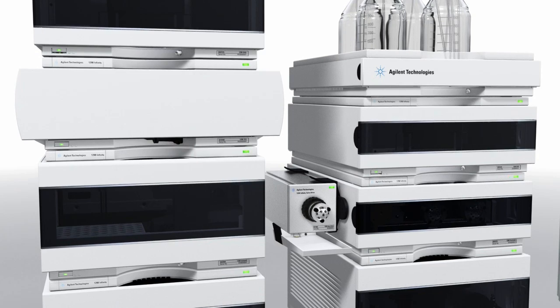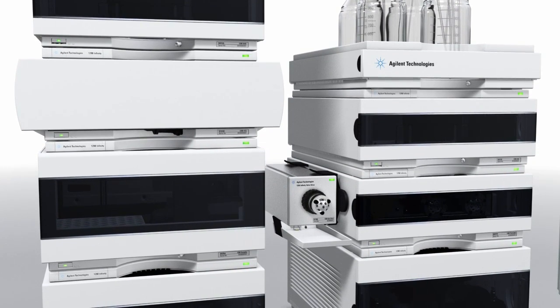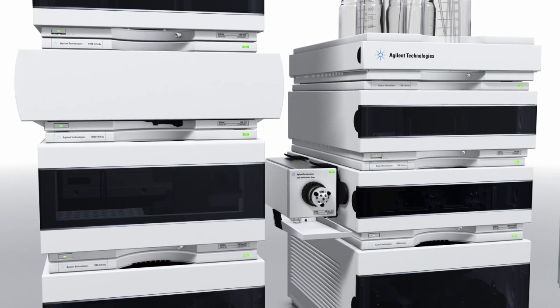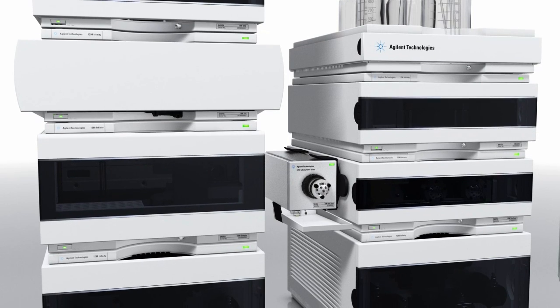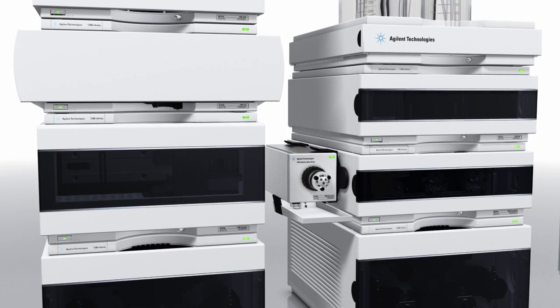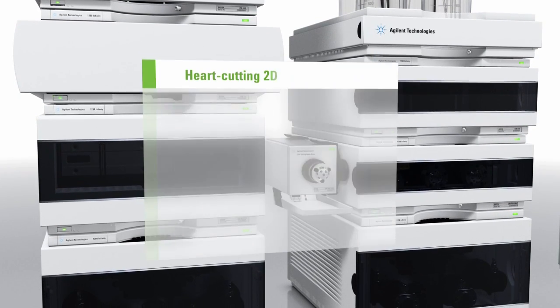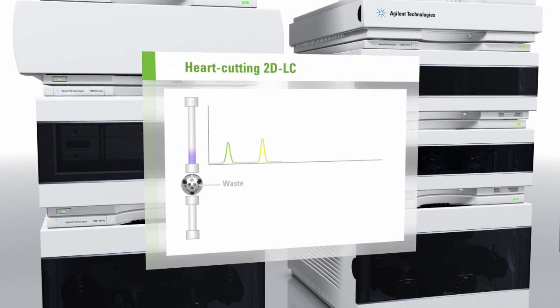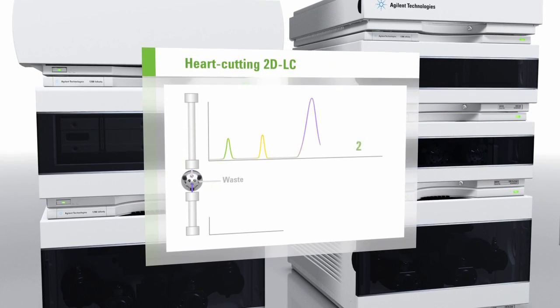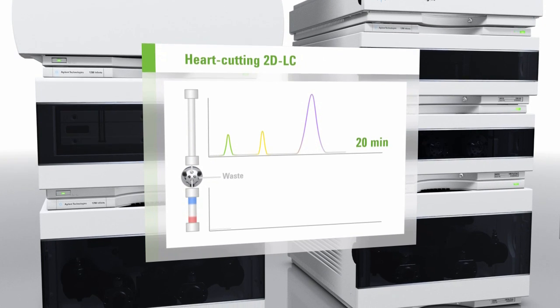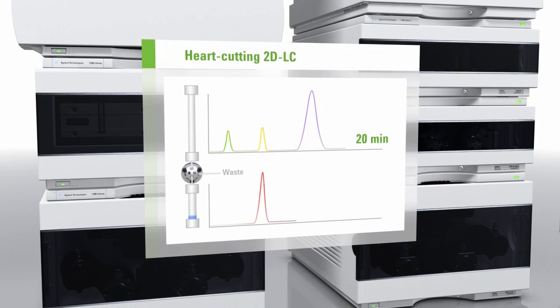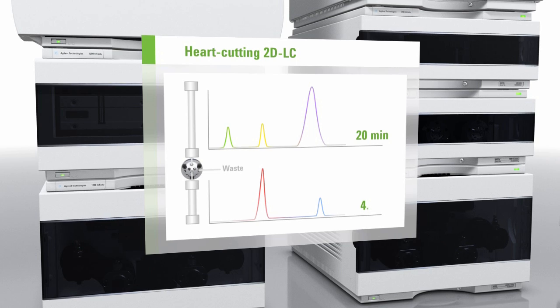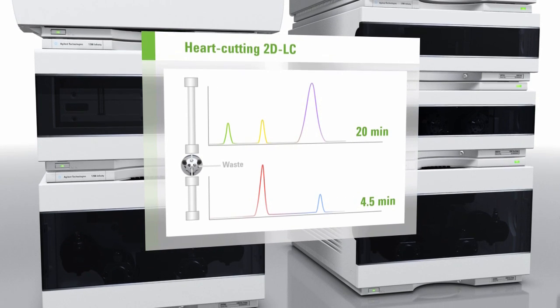Heart cutting 2D LC is a simple technique to ensure dedicated peaks at specific points have been identified and that none are concealed by larger peaks. In heart cutting 2D LC, selected parts of the first dimension's column effluent are transferred to the second dimension column. Typically, one or two peaks are cut out and analyzed on a longer column with higher separation efficiency.